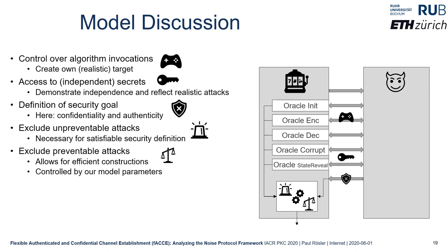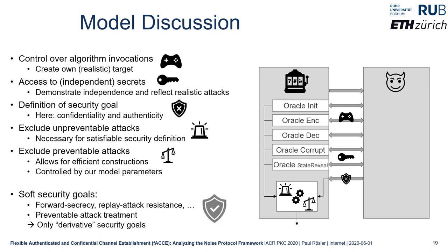Security frameworks also include preventable attacks that are still excluded from being considered successful, allowing for more efficient constructions and more precise security guarantees. In our model, these exclusions of preventable attacks are controlled via the model parameters previously discussed. As a result, further soft security goals are derived — for example, forward secrecy is a soft security goal defined via when and under which conditions a party corruption can take place, and replay attack resistance is a soft goal derived from authenticity.